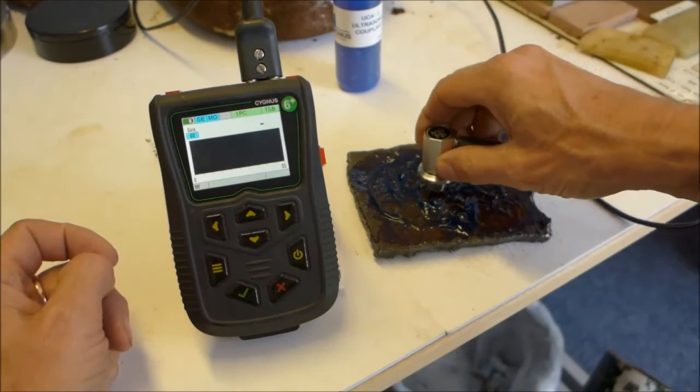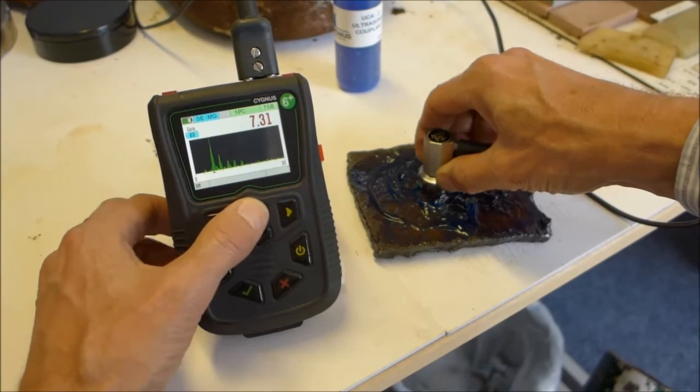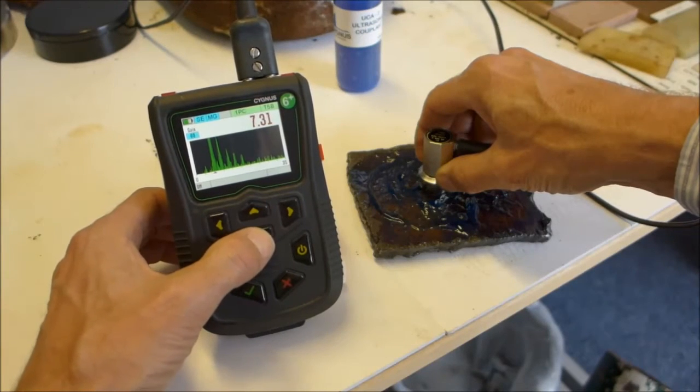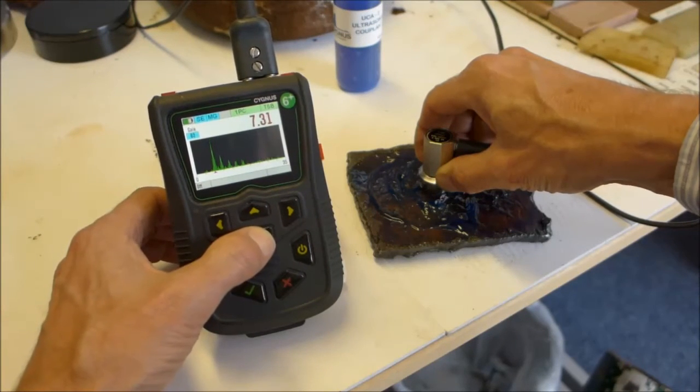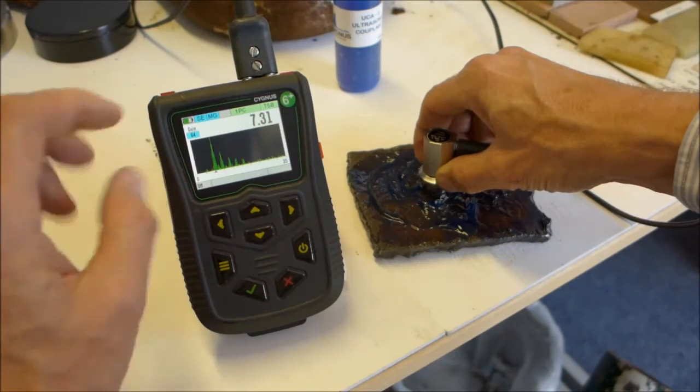So now I can put the probe on this corroded sample and use the up and down keys to adjust the gain. As you can see, the A scan is responding as I am adjusting the gain from 52dB up to 64dB, which gives me a good A scan.